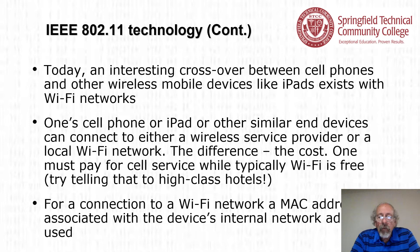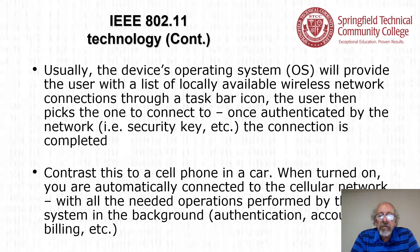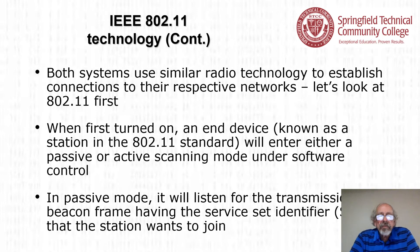For a connection to a Wi-Fi network, a MAC address associated with the device's internal network adapter is used. A device's operating system will provide the user with a list of locally available wireless network connections through a taskbar icon. The user picks the one to connect to, and once authenticated by the network — providing a security key or username — the connection is completed. Contrast this to a cell phone: when turned on, you are automatically connected to the cellular network, with operations like authentication, accounting, and billing performed in the background.